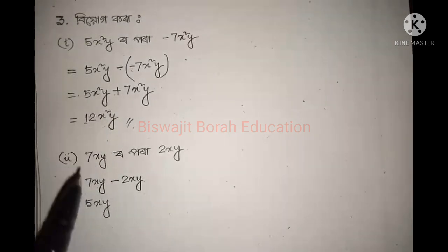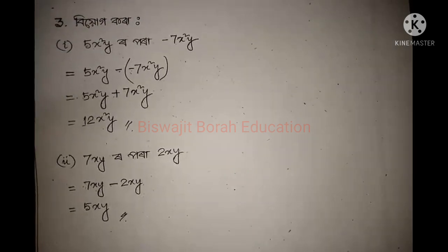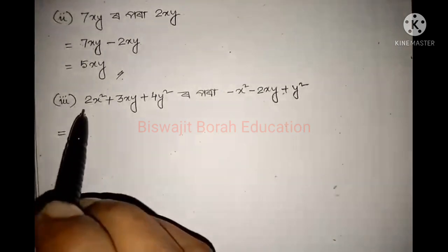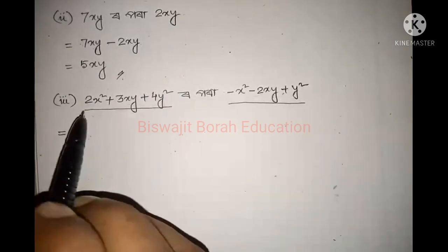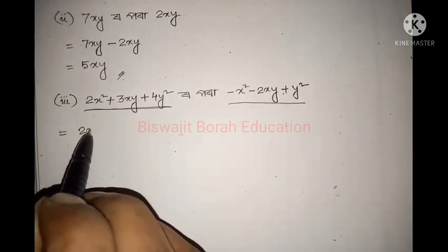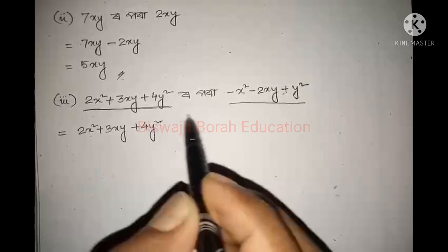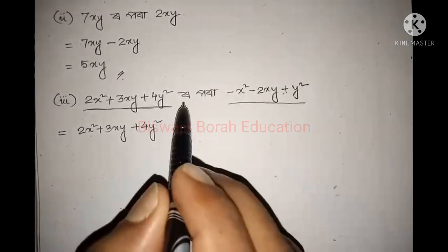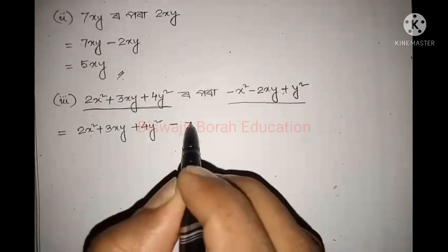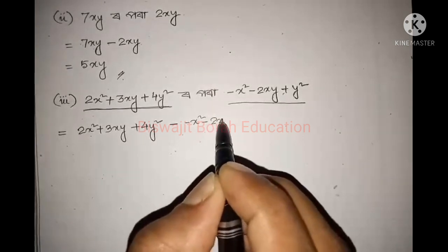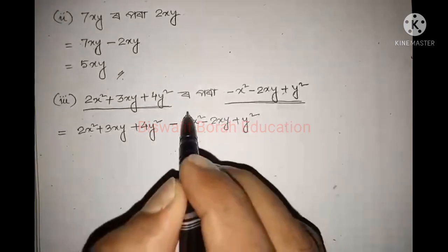1 sinthakile a jug and 2 sinthakile a jug. Next, number 3. If you have 2 numbers, you can write this number: 2x squared plus 3xy plus 4y squared. I am going to write this number.